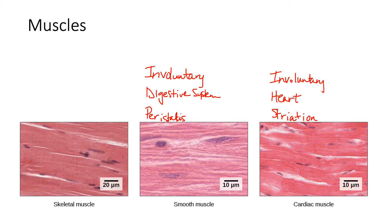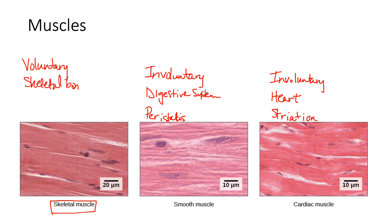Our focus today is on skeletal muscle. First of all, this is voluntary — we decide to move our arm or our leg, or we hold our posture. We find these muscles attached to and around skeletal bones, and the point of these muscles is to move our bones. You can see a striping pattern all along the fibers of this muscle tissue, so we'll put it as striated and talk about what causes that striation pattern.